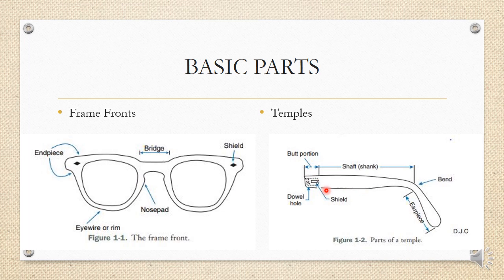The temple has a part called the shield, which is the metallic part having barrels or double holes. These double holes align with the end piece barrel, and a screw is placed to lock it in place, allowing an opening and closing mechanism. The area where the shield is present is called the butt portion. From the butt portion to the bend is called the shaft or shank, and from the bend to the end of the temple is called the earpiece.